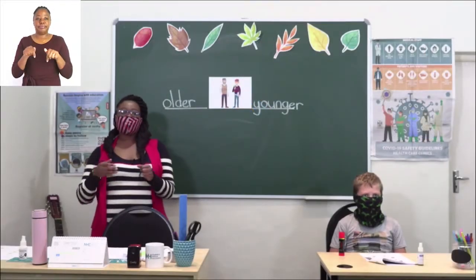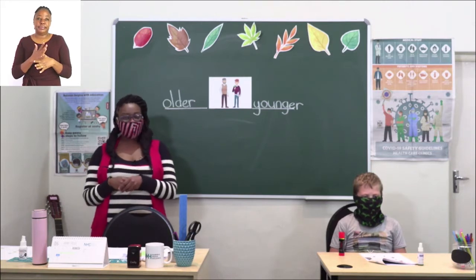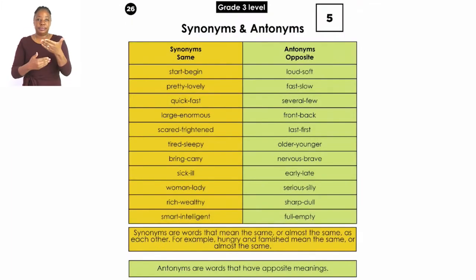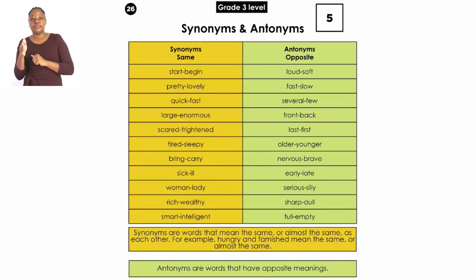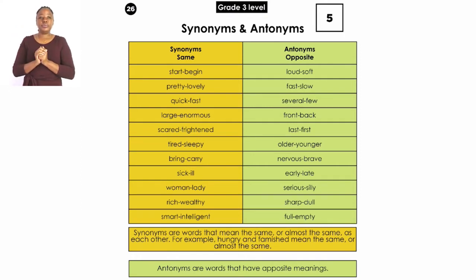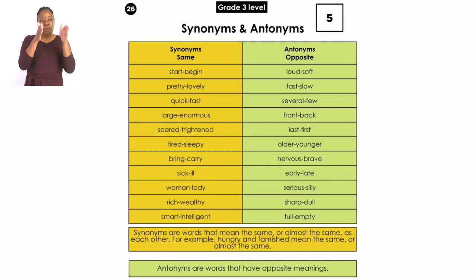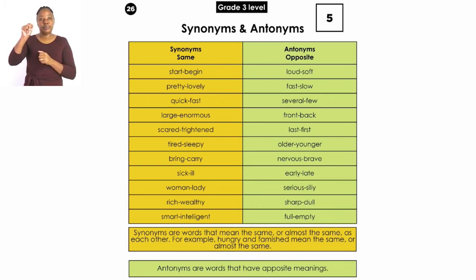Our first exercise for today can be found on page 26. On page 26 we will be discussing synonyms and antonyms. I know these are very weird-sounding words, so let's say them together. Let's say the word 'synonym.' Very good. Let's start with synonyms now. A synonym is a word that means the same or almost the same as another word.